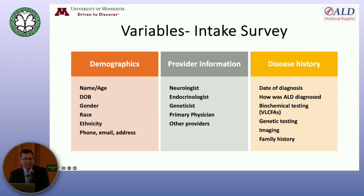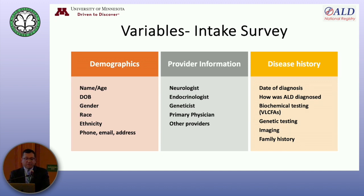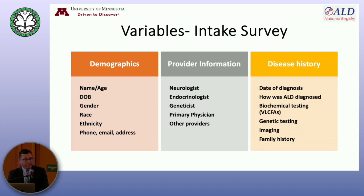We send the intake survey, which is divided into three main parts. First are the demographics. Then we get the provider information, and we also ask if the families are connected to any comprehensive ALD clinic. We look into the disease history on the online survey — it is not in-depth; it is essentially what families remember, whether biochemical testing was done or not, whether genetic testing was done or not. No numbers or anything. Same for imaging. We delve a little deeper into the family history. Regarding diagnosis, we ask about the modality — including newborn screening, family history, adrenal insufficiency, or whatever way it was diagnosed.